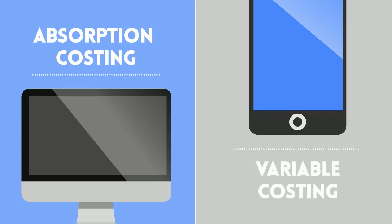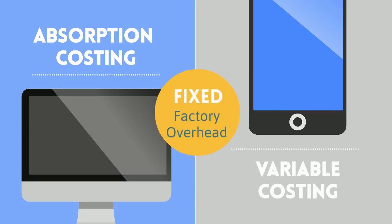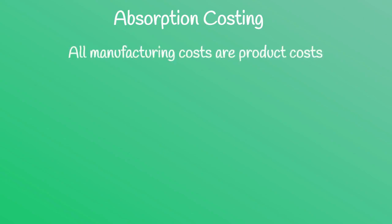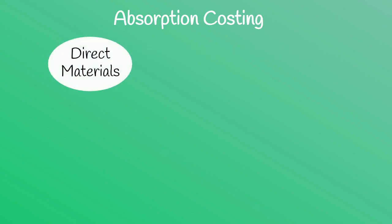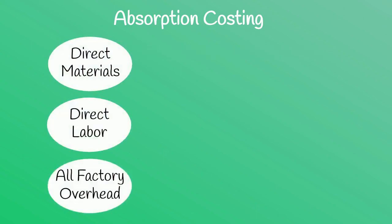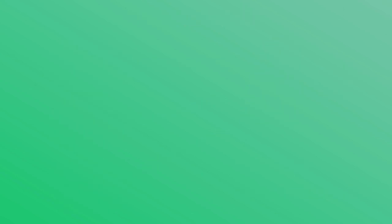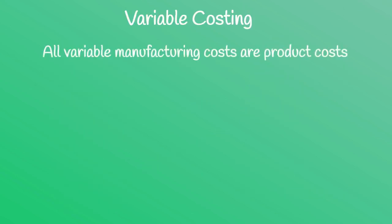The difference between these two methods is in the treatment of fixed factory overhead. With absorption costing, all the manufacturing costs are included as product costs — so direct materials, direct labor, and all of the factory overhead are part of product costs. These are included in inventory and in cost of goods sold.